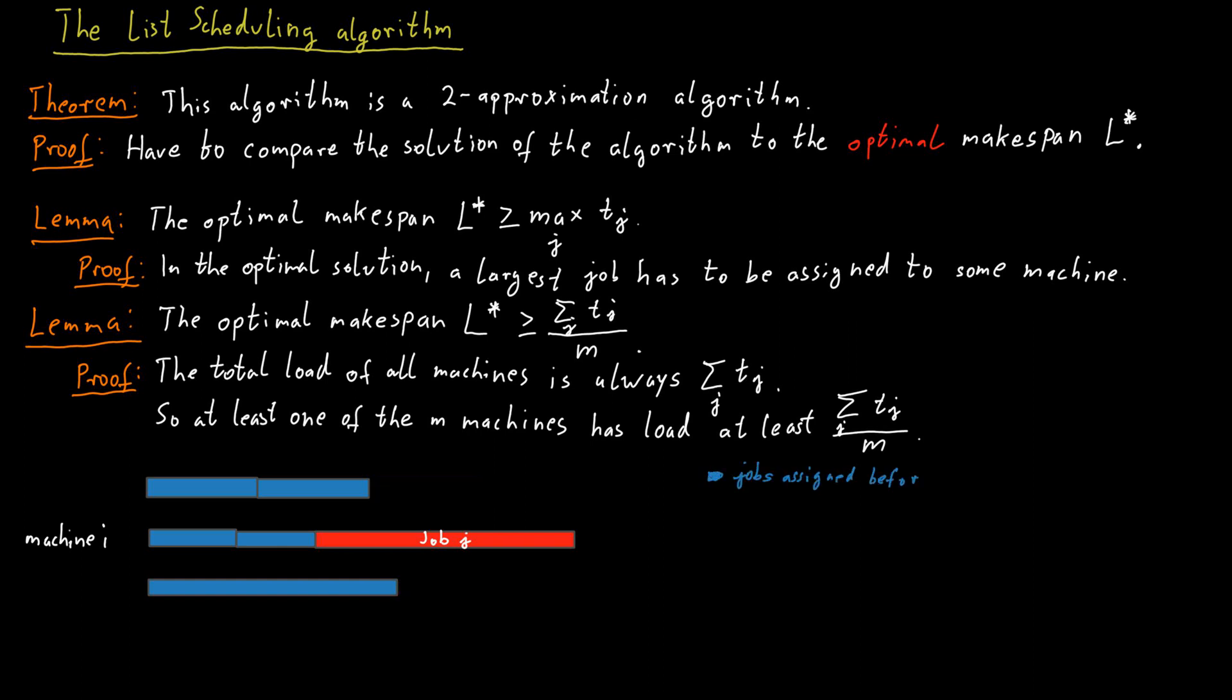Because we use a greedy algorithm, it must be the case that all the machines had a load that was at least equal or more than the load on machine i at that time. We know that the optimum makespan has to be at least as large as this common load on all the machines. And then on top of that, the load of machine i increases by another tj, where tj is the processing time of job j. But again, we know that the optimum makespan must be at least as large as tj, because we know that the optimal makespan is as large as the processing time of any single job. And therefore, we know that in total, the load on machine i is at most twice the optimal makespan.